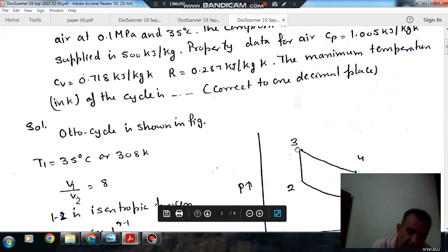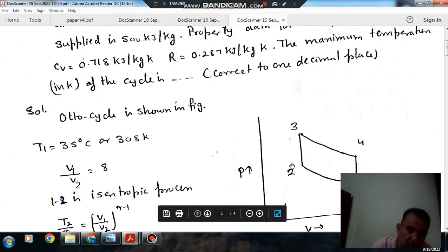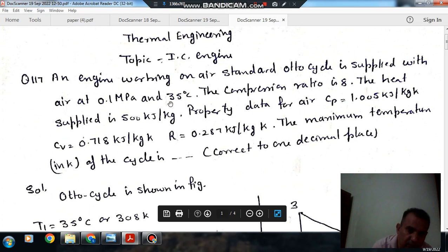2-3 is your heat addition at constant volume, and 3-4 is your isentropic expansion, and 4-1 is your heat rejection at constant volume. So T1 is your 308 Kelvin, or T1 temperature is your 35 degrees Celsius or 308 Kelvin.